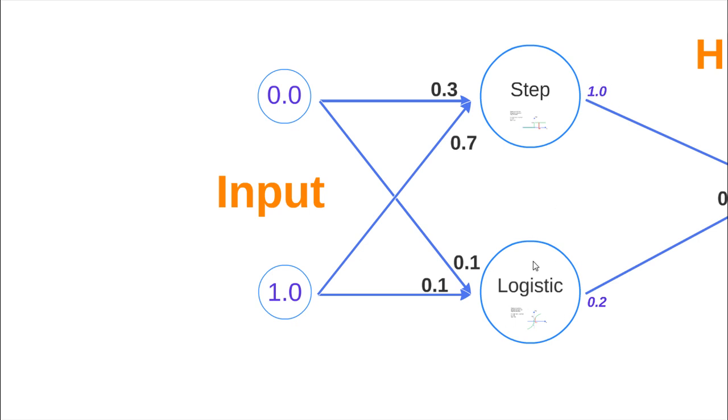Let's propagate now the second neuron. We also have these two inputs, and now we have different weights here. We also have a logistic function, which is a different function from this previous neuron.